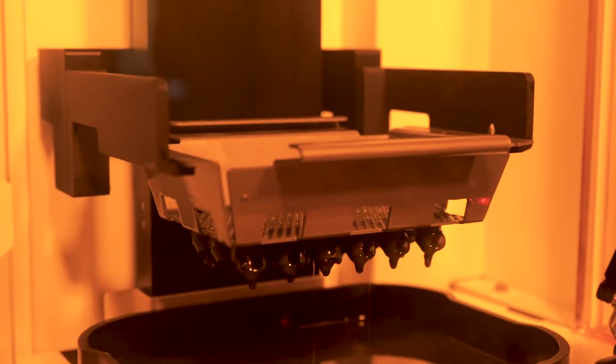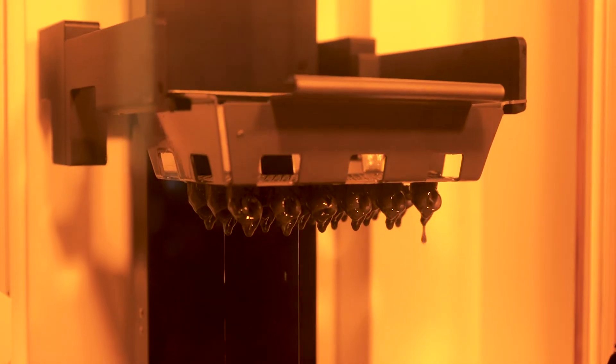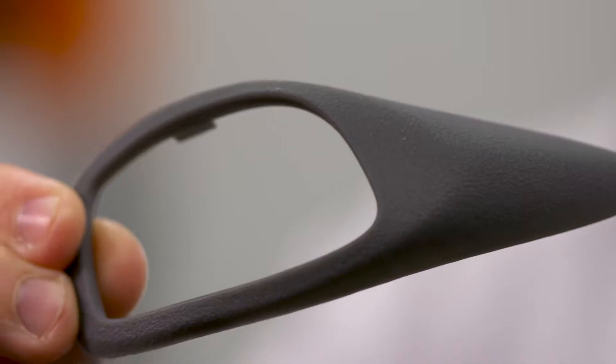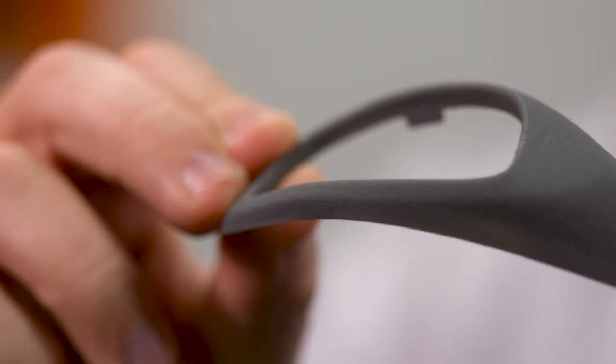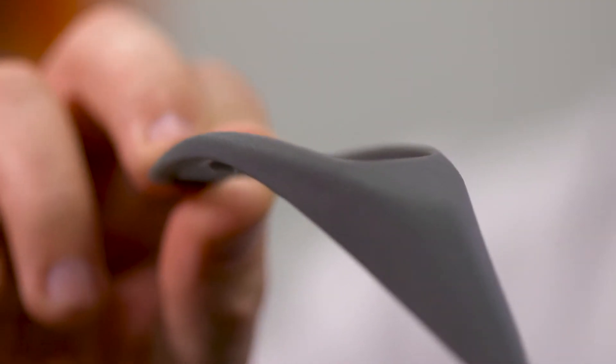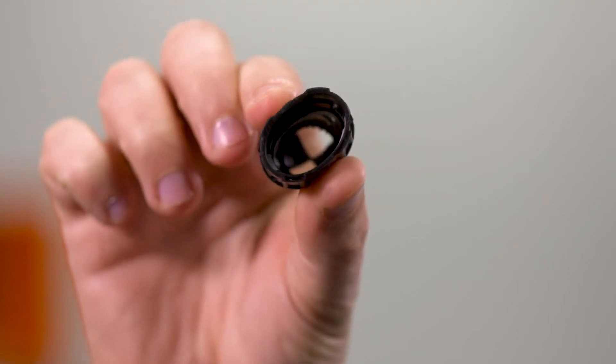Parts can be printed at up to 100 millimeters per hour. It also means that parts are extremely accurate, smooth, and fine detailed with almost no sign of build layers or stepping effects on curved surfaces, something that's common in other 3D printing technologies.